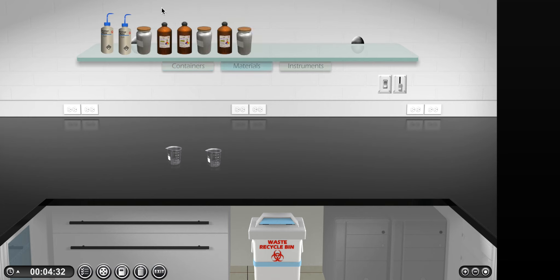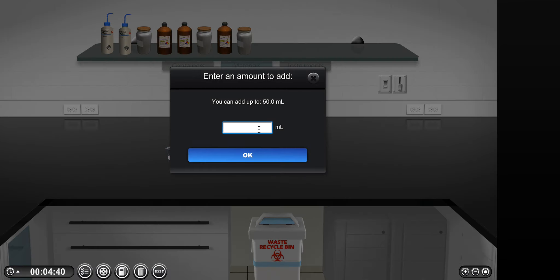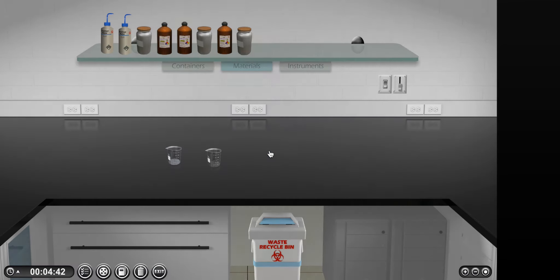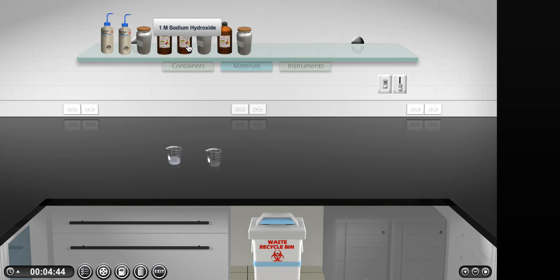In the first beaker, we will place 15 milliliters of sodium hydroxide solution. In the second beaker, we will add 6 milliliters of 1 molar nickel chloride solution.